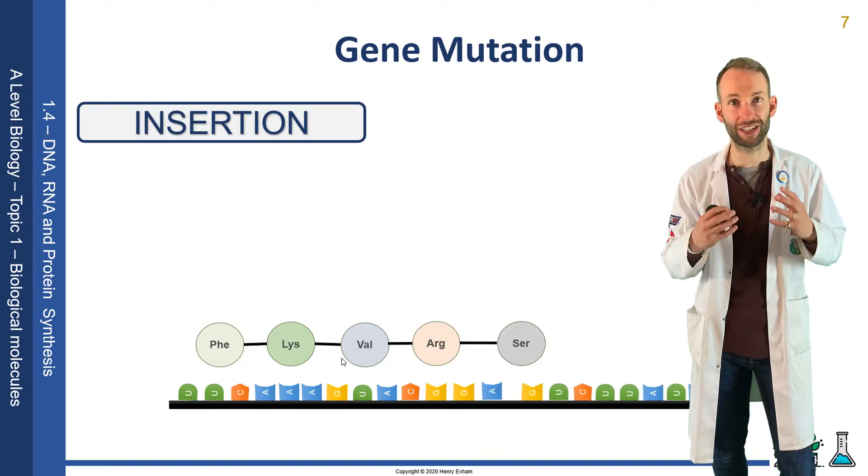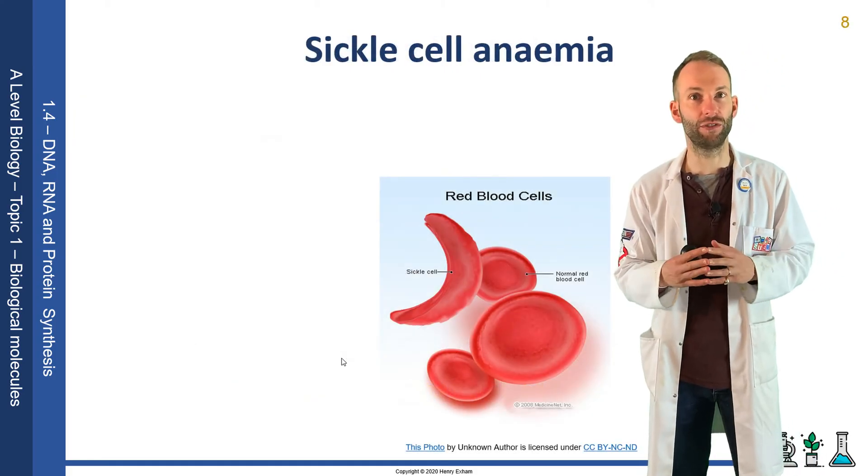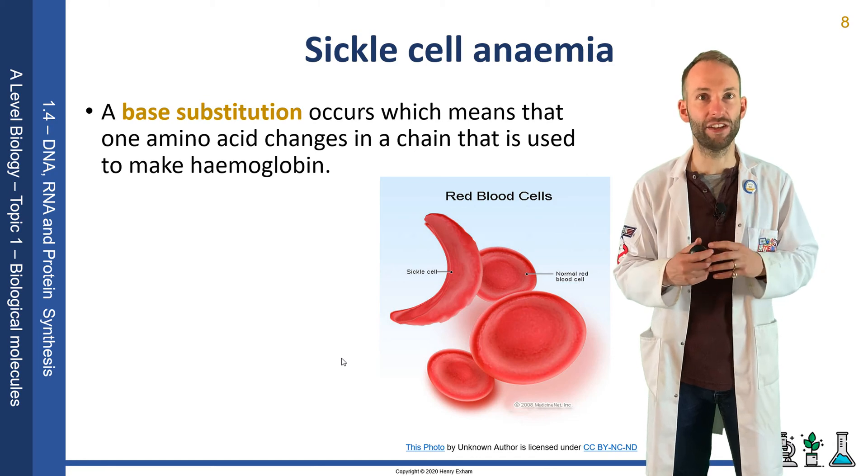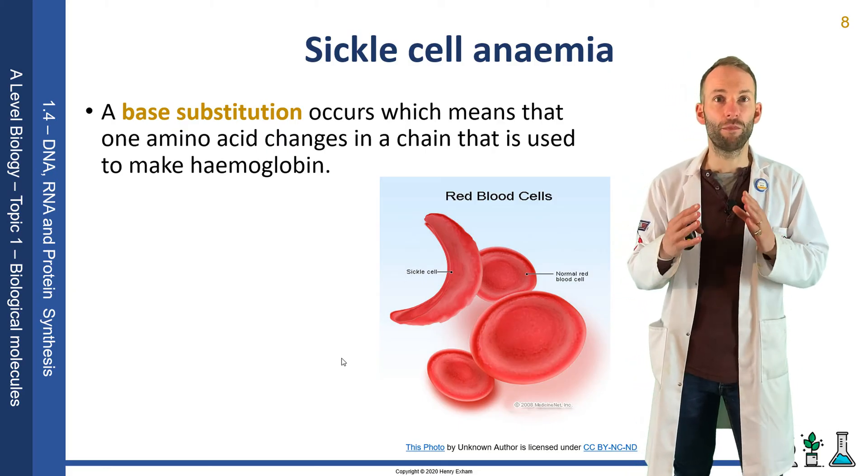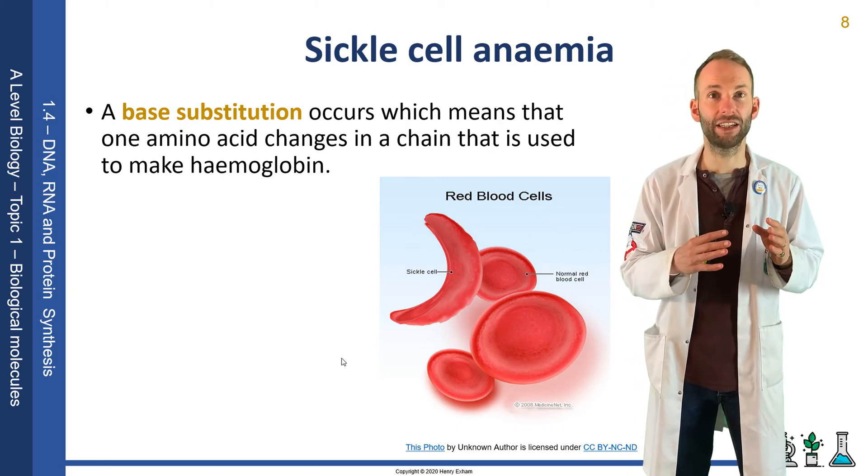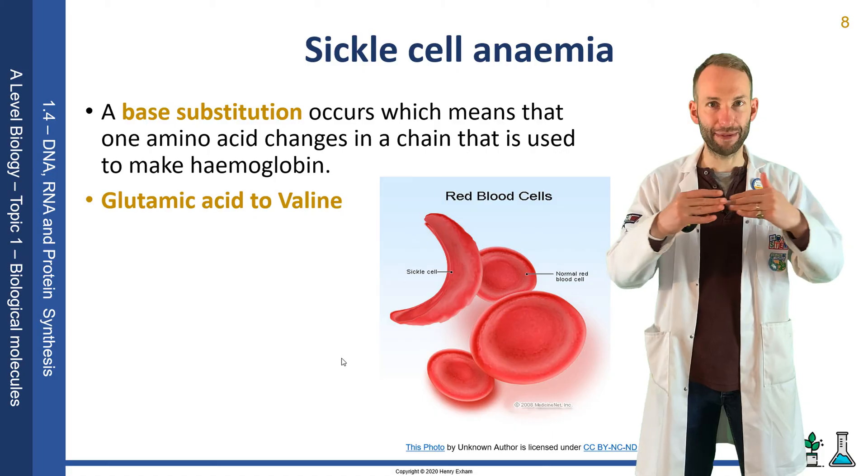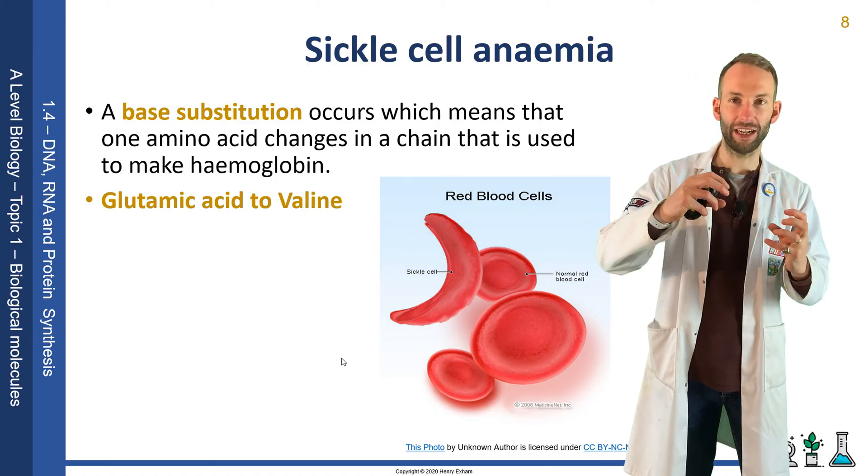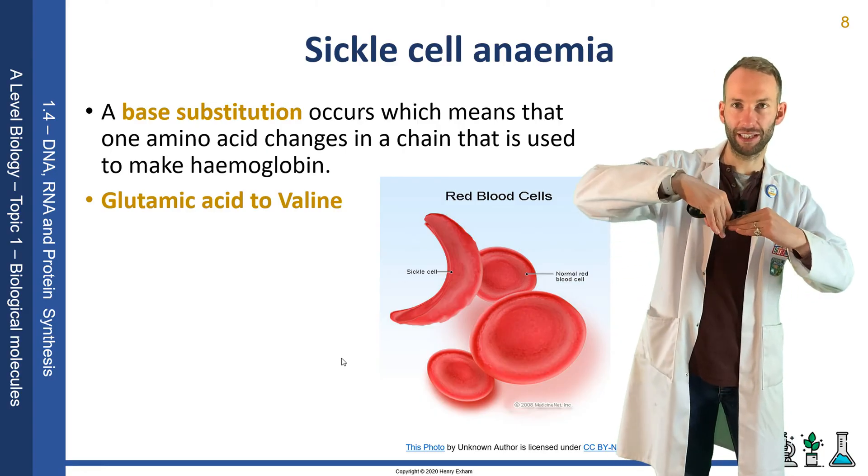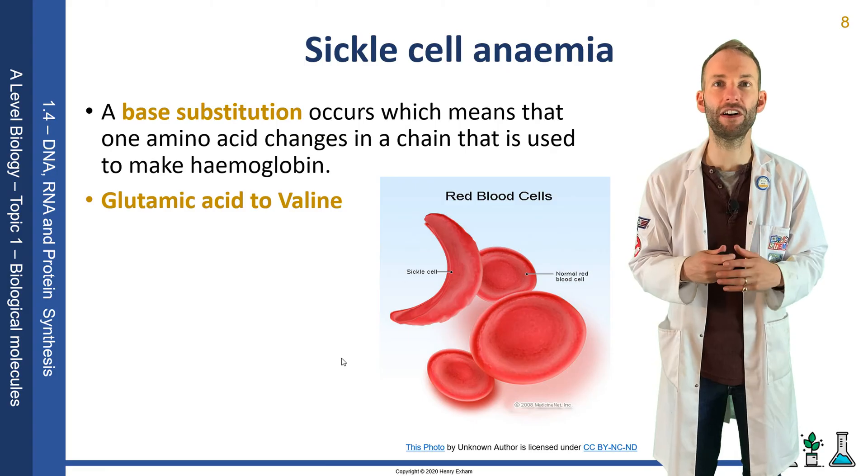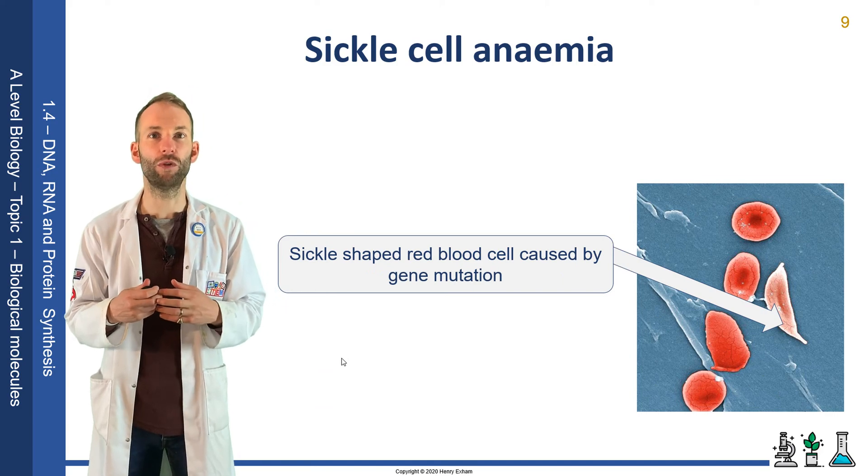An example of a condition caused by a point mutation is sickle cell disease or sickle cell anemia. It's caused by a base substitution which means that one amino acid changes in the chain that is used to make hemoglobin. There are 147 amino acids in this polypeptide, but by just changing one of them—glutamic acid to valine—it causes the nature of the protein to change. The hemoglobin starts to stick together and makes these long rods, forcing the red blood cell out of its normal biconcave shape into a bent sickle shape instead, which makes it far less efficient at picking up oxygen and causes blockages in small blood vessels.